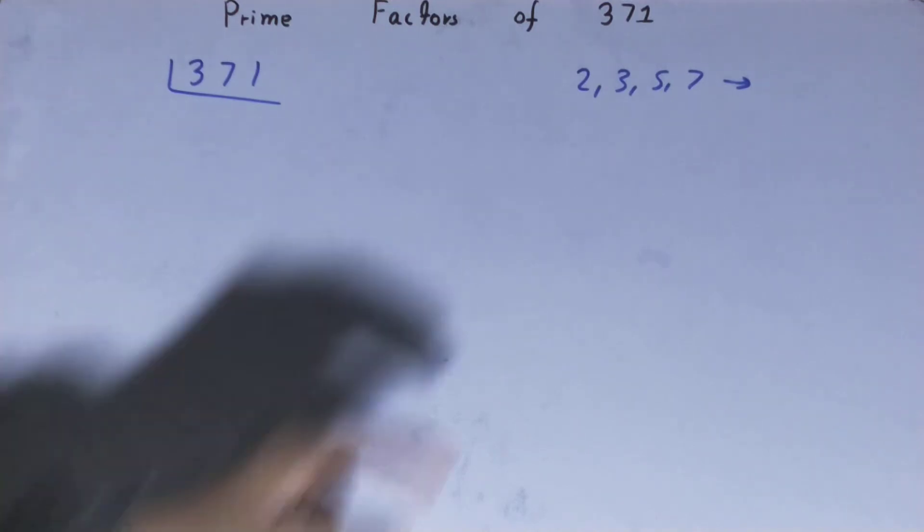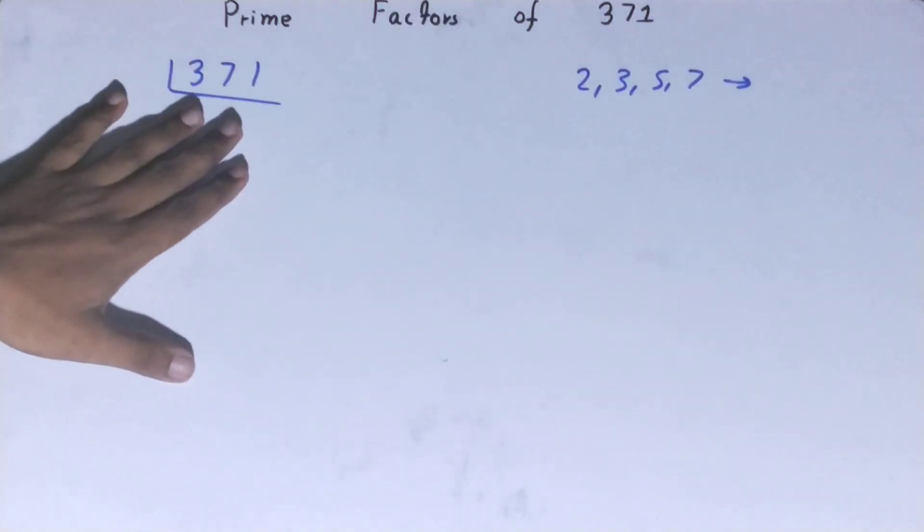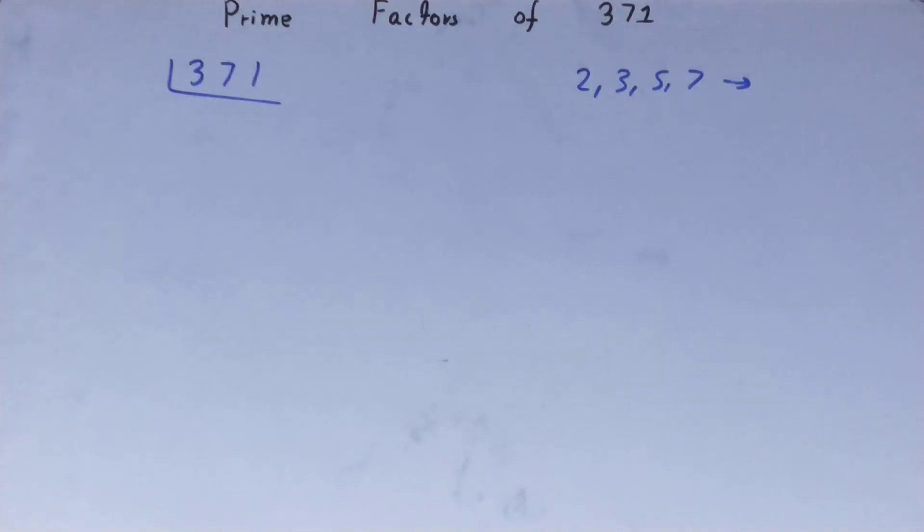We'll start with the lowest prime number we have, that is 2. Is the number 371 divisible by 2? Clearly not, because it is an odd number.